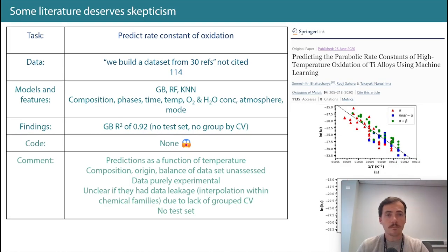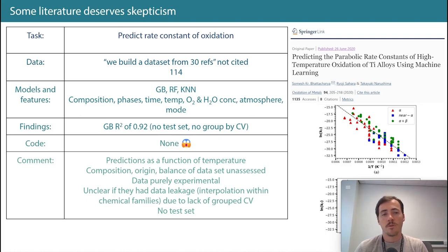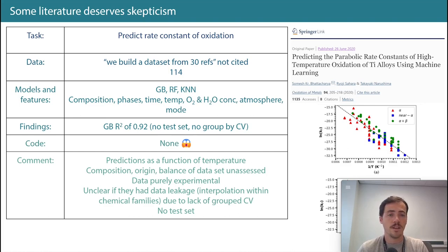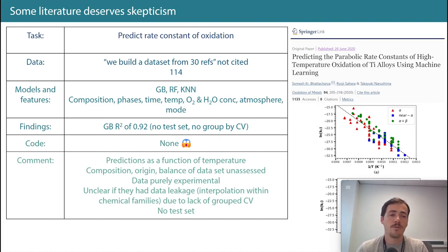Here's our first property prediction paper, from Bhattacharya in 2020 in the journal Oxidation of Metals. Their task was not classification — now it's predicting a material property: specifically the rate constant of oxidation. They claim a dataset built from 30 references (not cited) yielding 114 data points. As models, they tried gradient boosting, random forest, and CANNN.